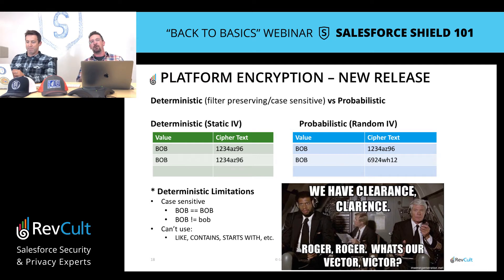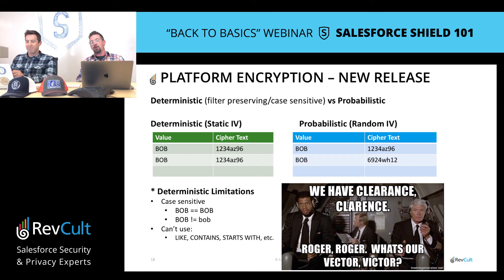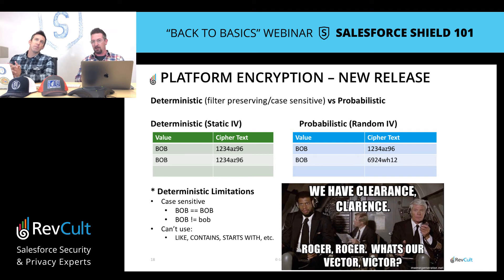There are ways to create what would be called a deterministic encryption scheme. In general, the way it works is that deterministic encryption has a static initialization vector. And what that means is that when we write the same value to the database, we're going to write the same ciphertext each time, which allows you to start doing some filtering.